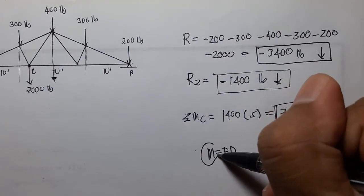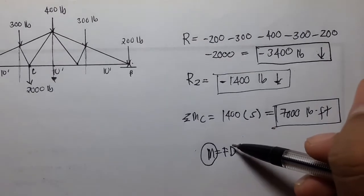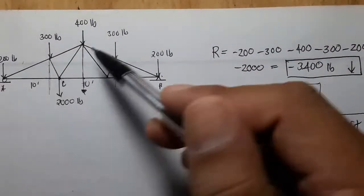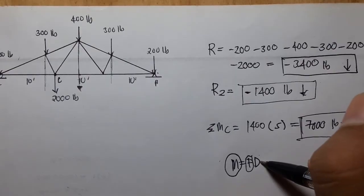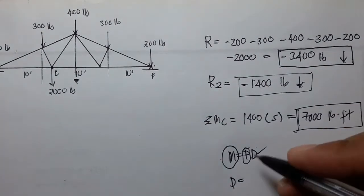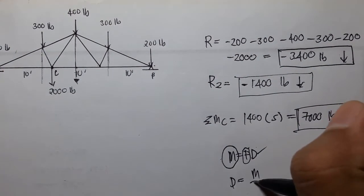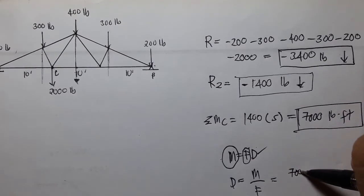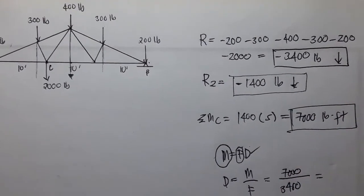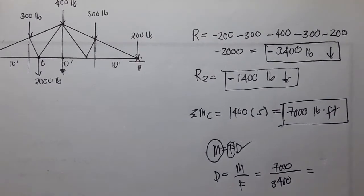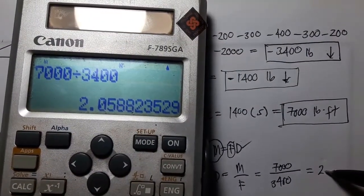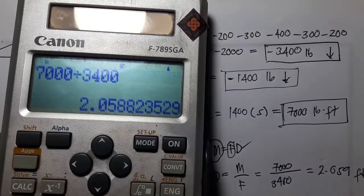We already solved for the moment. Now we have the force — the original resultant of all forces — so we can solve for the distance or the location of the resultant, the 3400 pounds. Using the formula: moment over force, so 7000 over 3400 equals 2.059 feet.